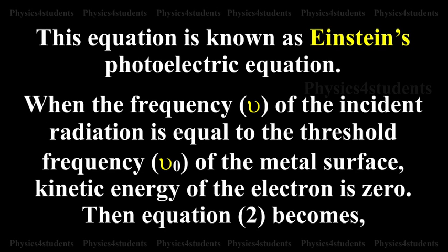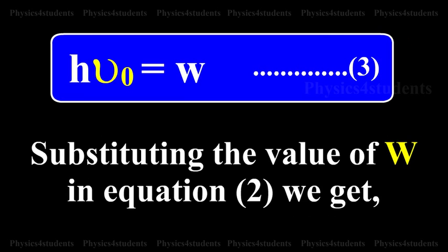Then equation 2 becomes H nu0 is equal to W. This is equation number 3. Substituting the value of W in equation 2, we get